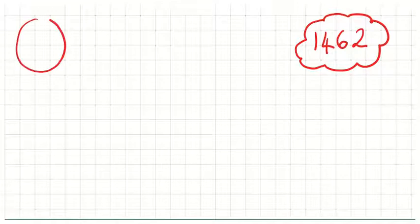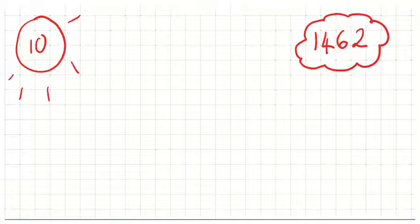Let's take one more look at rounding to the nearest ten with the mountain method. This time we are going to round the number 1462 to the nearest ten. I'm going to draw my mountain.